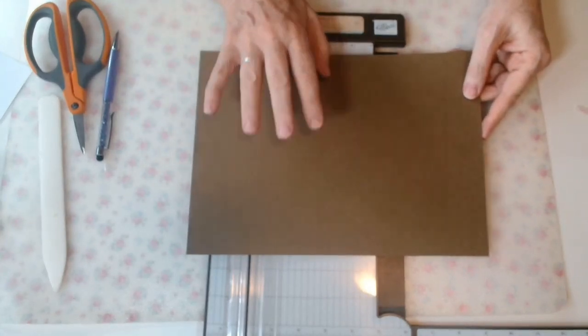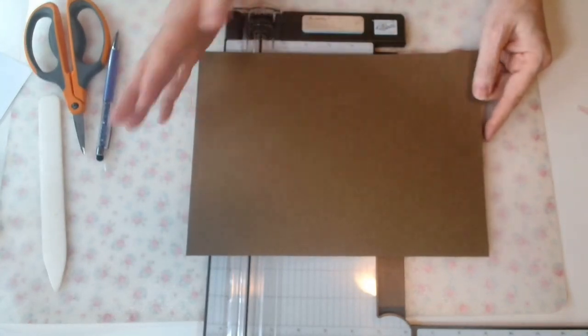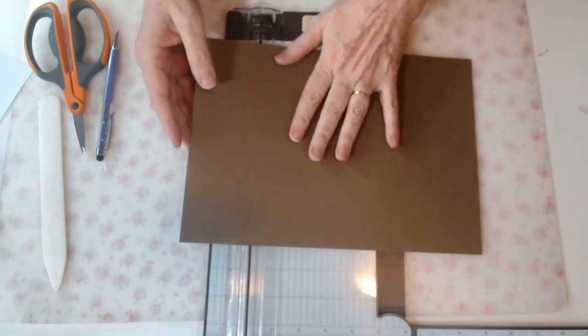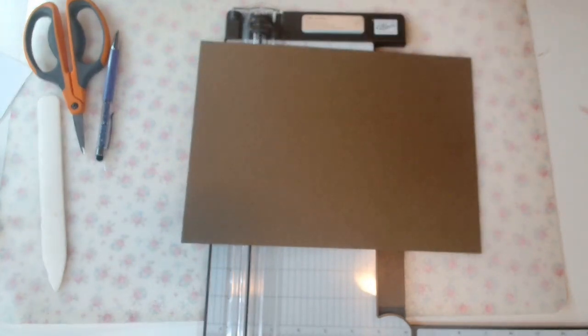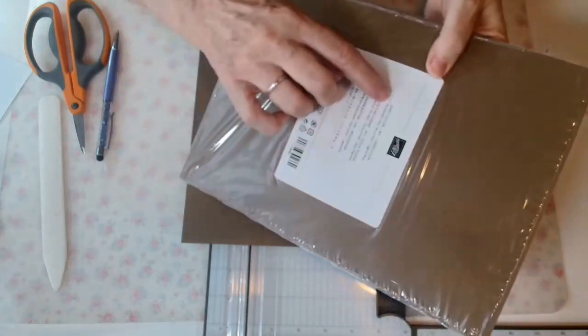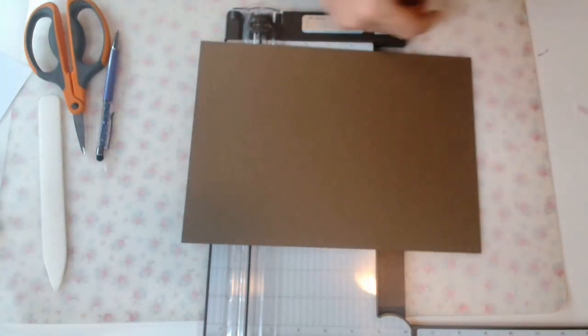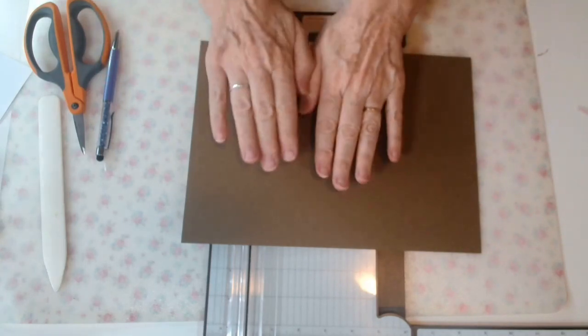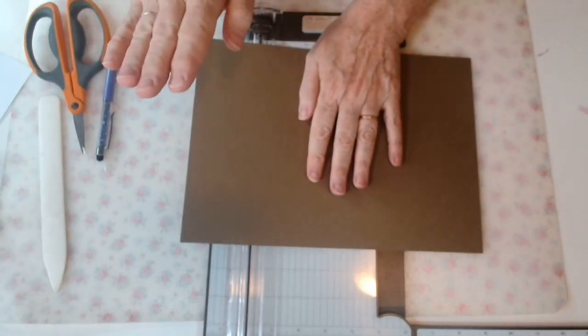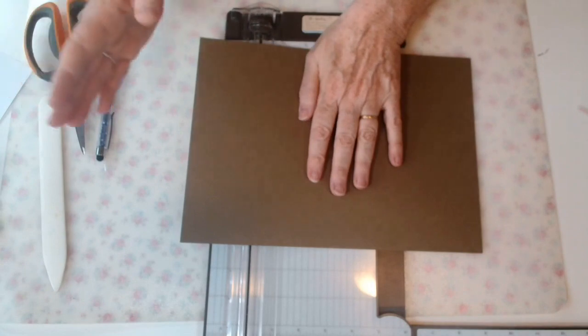You will need a sheet of A4 cardstock. I have this one right here. It's the color I chose. I think it's called Soft Suede. It is a Stampin' Up color. I like Stampin' Up cardstock because it's nice and smooth and it cuts nicely.